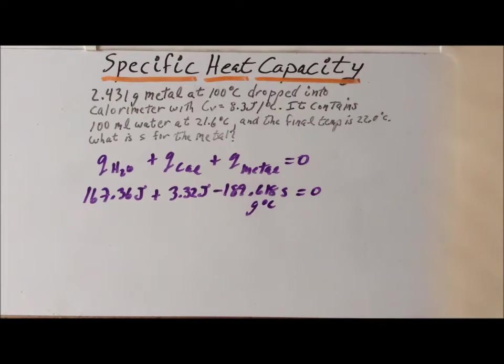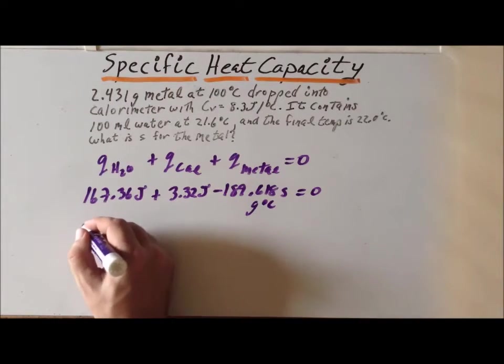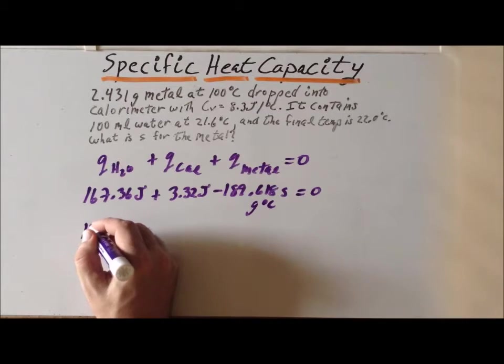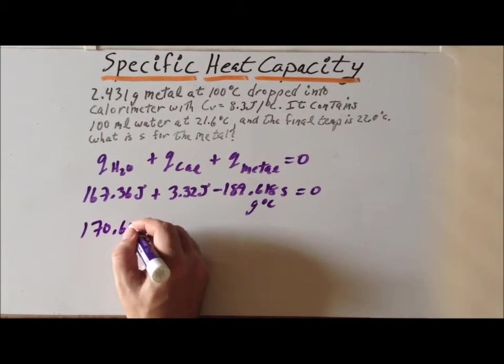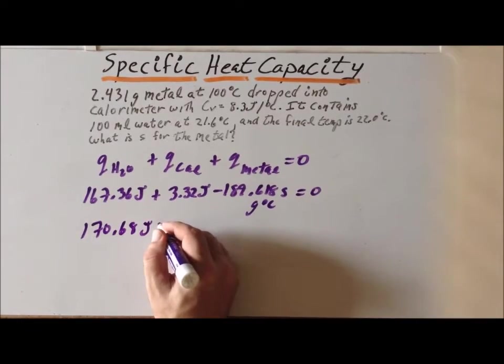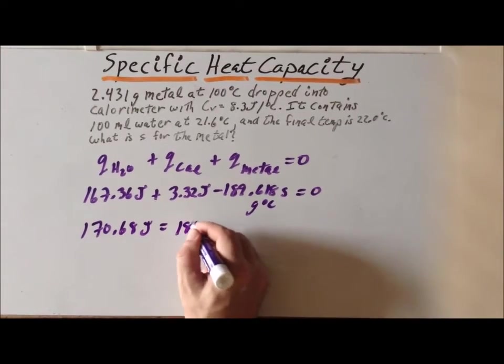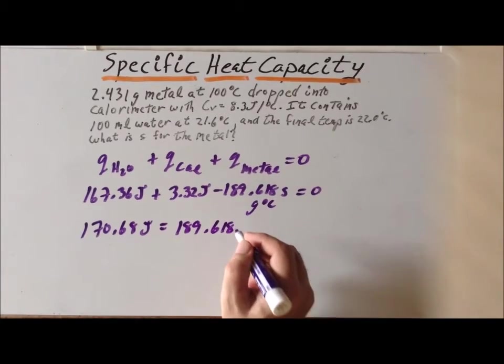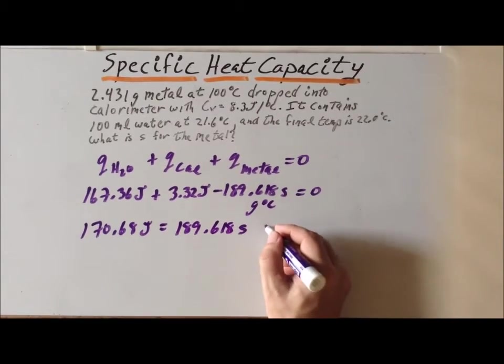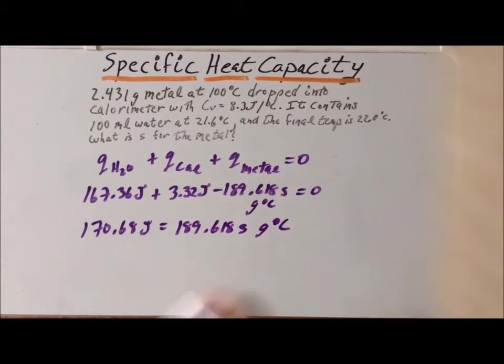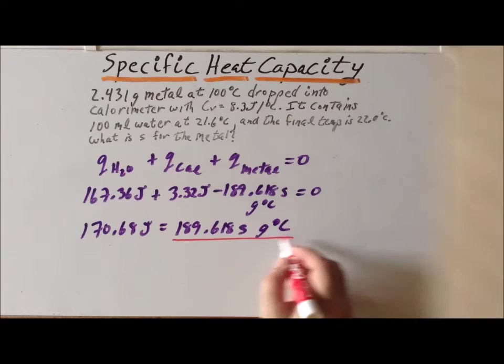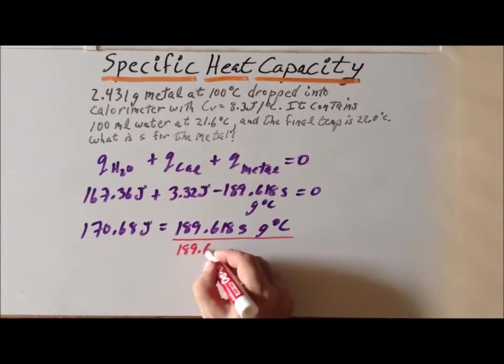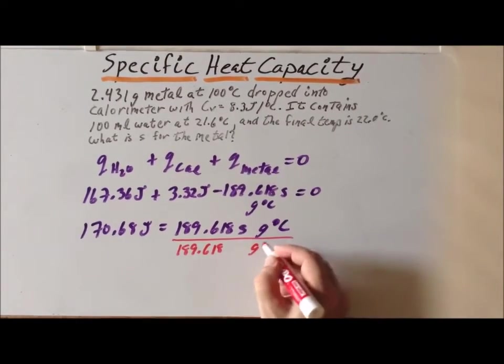Now, we can add 189.618 S to each side to get the following result. That means 170.68 joules equals 189.618 S grams degree centigrade. Now we divide each side by 189.618 grams degree centigrade.